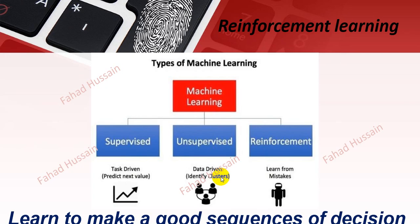Now let's start with reinforcement learning. As we have already discussed machine learning and deep learning: first we talked about supervised learning, where we have the dataset in labelled form. In unsupervised learning we do not have labelled data. In reinforcement learning, as written in the slide, the key idea is to learn from mistakes. The agent in reinforcement learning learns from mistakes — it learns to make a good sequence of decisions, and next time it will avoid repeating the same mistake.